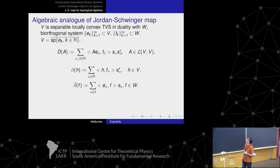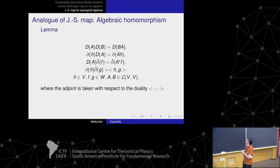Now we can define the algebraic analog of the Jordan-Schwinger map. We replace creation and annihilation operators with generators of the Cuntz algebra, obtaining analogs of the derivative in the direction and multiplication in the direction. We immediately get commutation relations — there is again an anti-homomorphism, so to get a homomorphism one takes the adjoint — and we have a structure of a module with derivatives in the direction to the left and multiplication in the direction to the right.